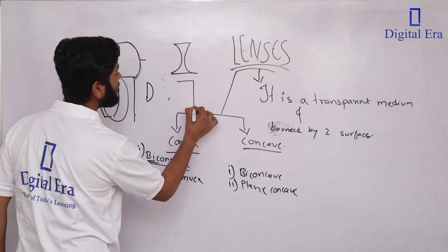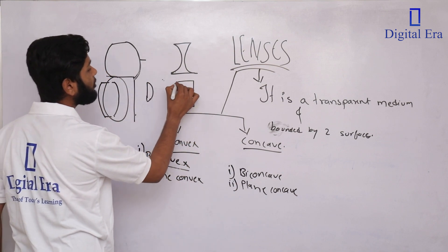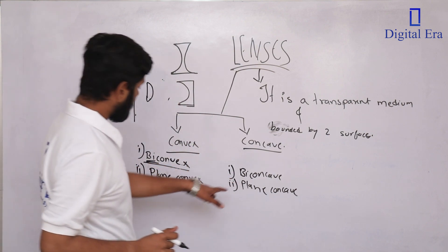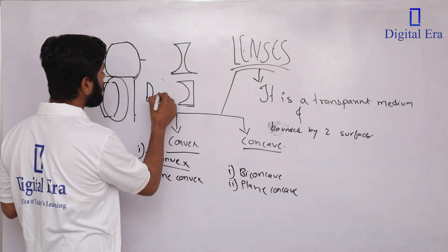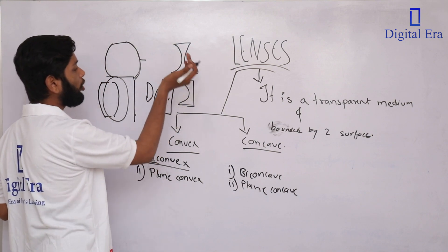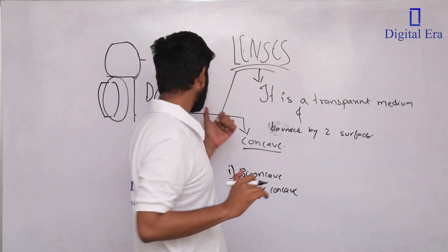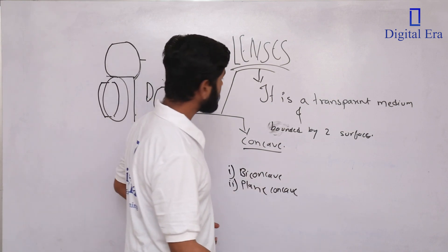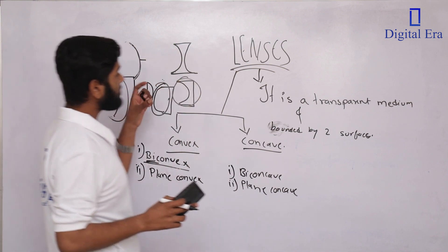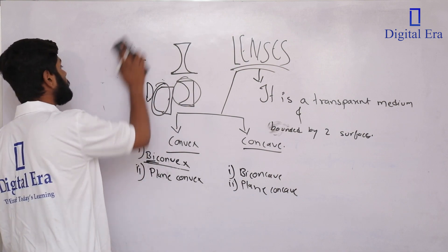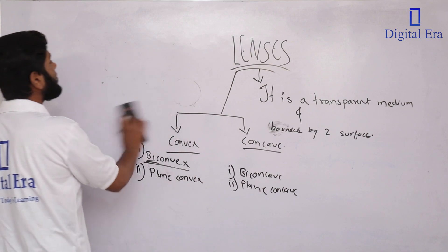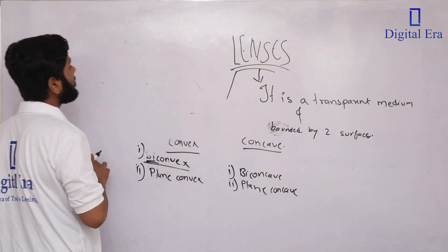There are many different types of lenses. A plane concave lens means one side is plain and one side is concave. A plane convex lens means one side is plain and the other side is convex. Then there is concave convex — so many types of lenses exist. Let's start studying these lenses.